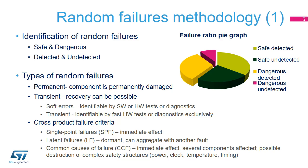The safe failure fraction, or SFF, is the ratio of the rate of safe failures — including the rate of detected dangerous failures — to the total failure rate of safe failures as well as detected and undetected dangerous failures. The diagnostic coverage, or DC, is the ratio of the probability of detected dangerous failures to the probability of all the dangerous failures.